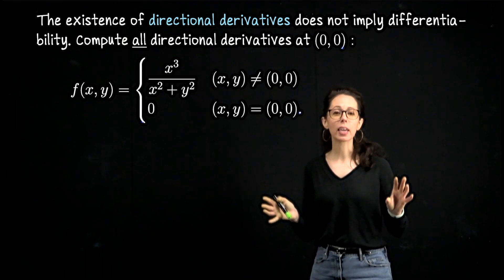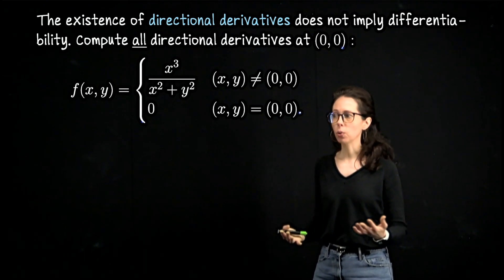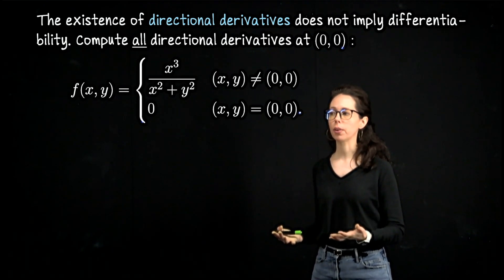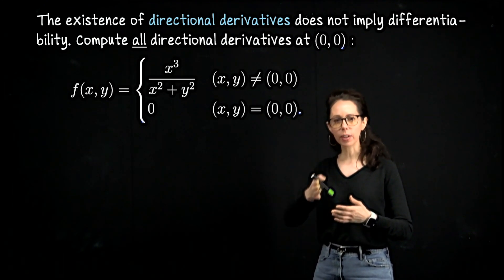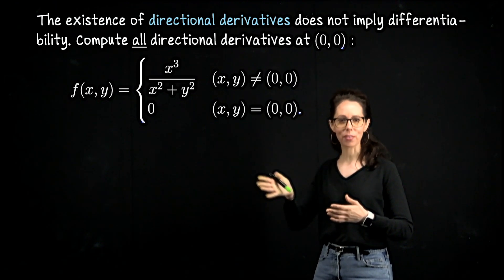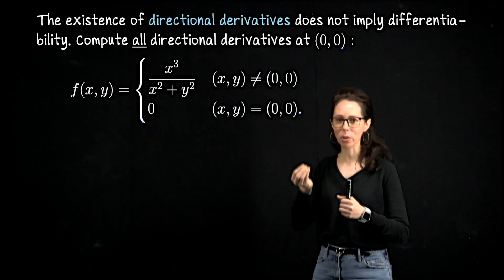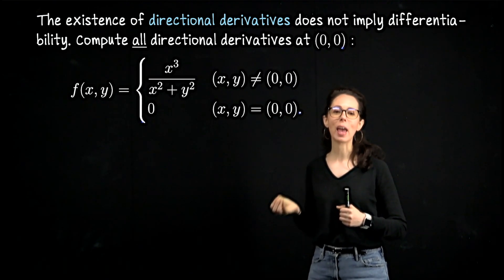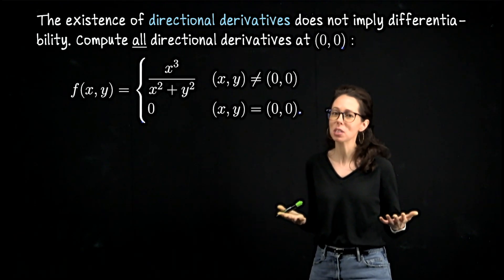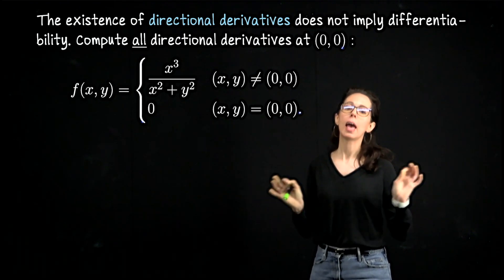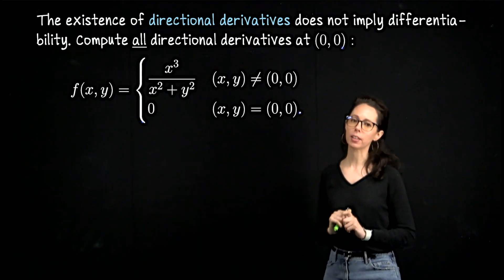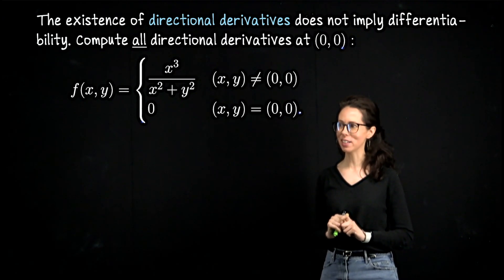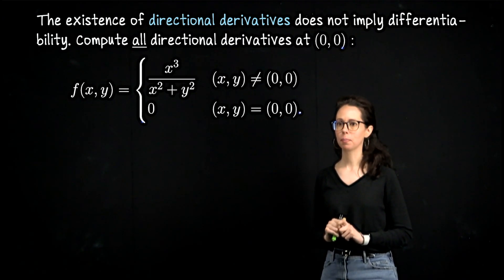Here we're taking it even further. Not only does this function have partial derivatives at the origin, it has every directional derivative. If you walk from the origin in any straight-line ray, the function seems to behave well and yet it still fails to be differentiable. So there are two goals to this exercise — let's start with the first one.